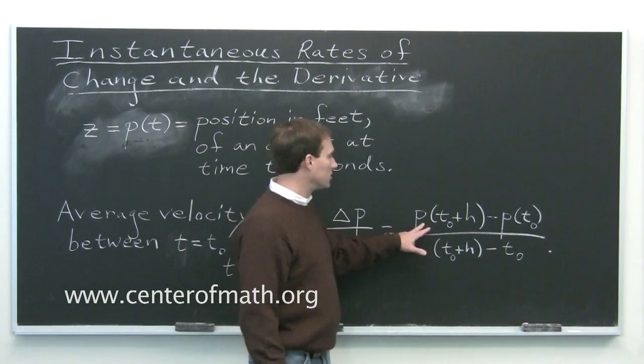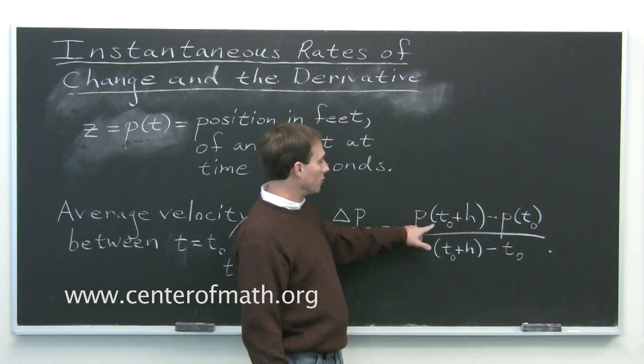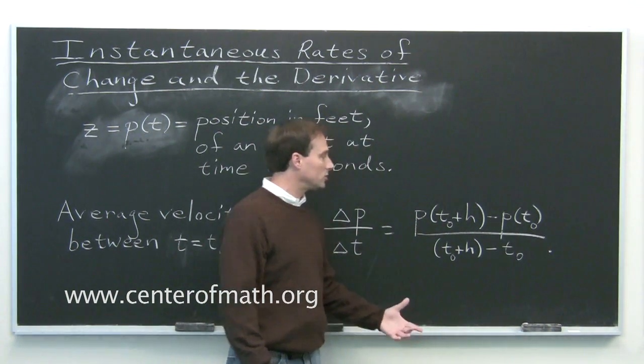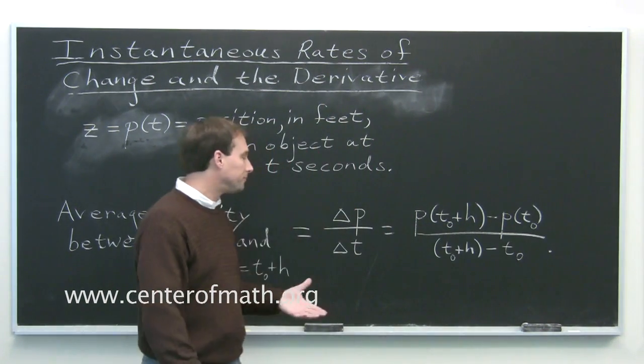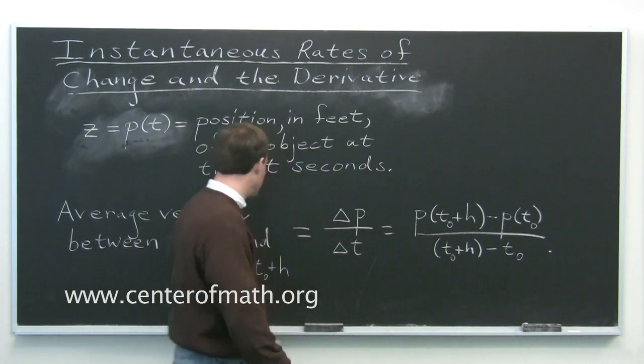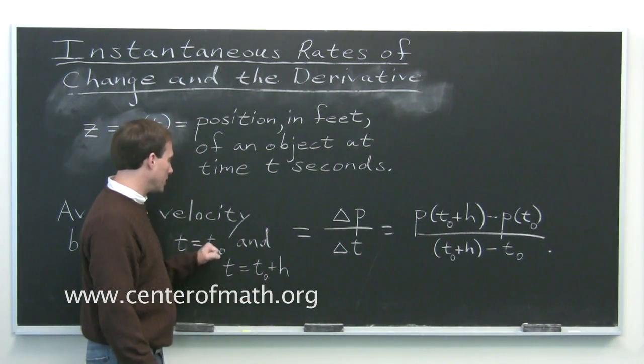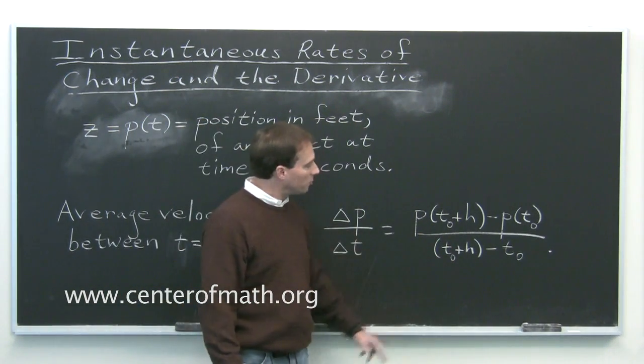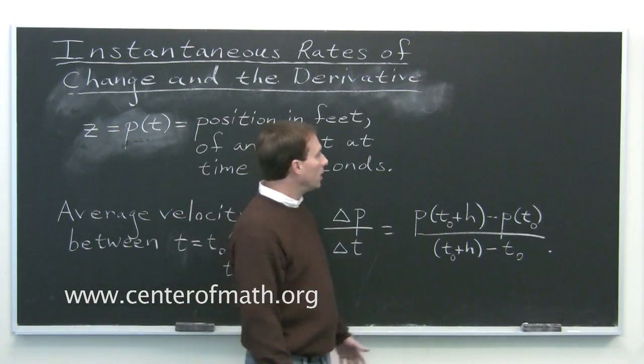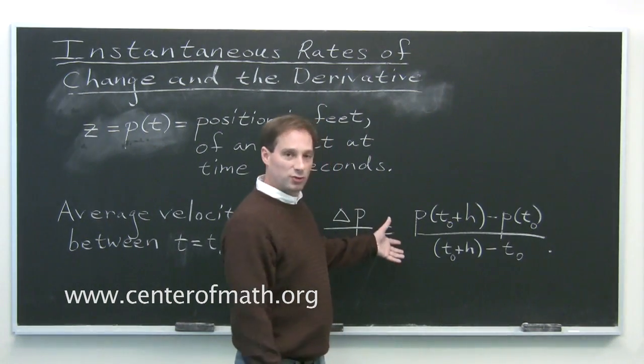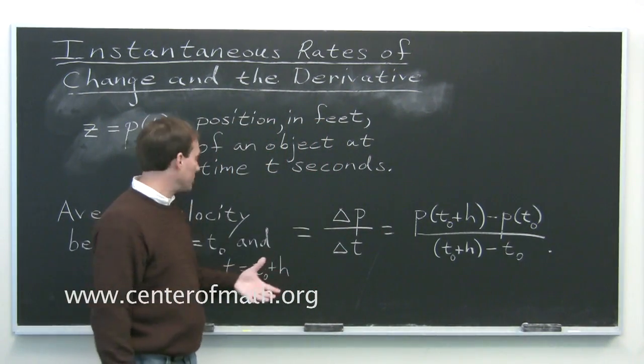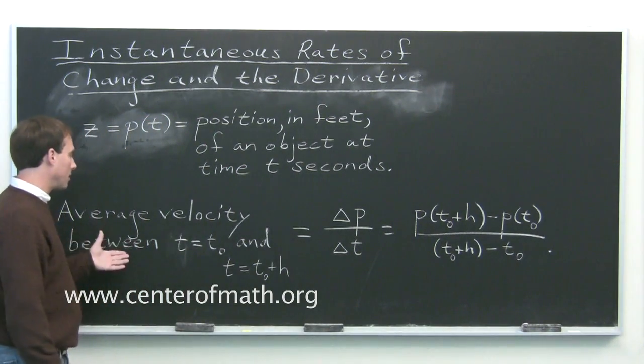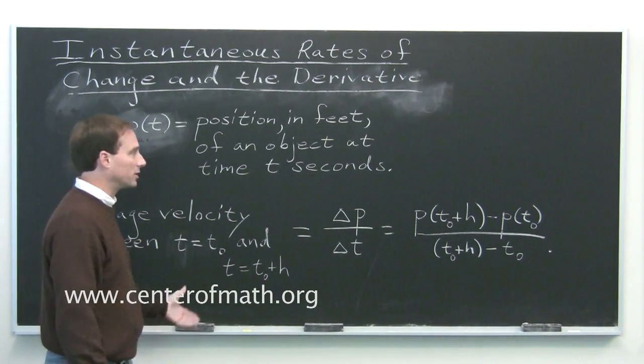It's the change in position over the change in time. Since p is our position function, it's your final position, the position at time t₀ plus h, minus your initial position, so that's the change in your position, and then divided by the change in time, which is t₀ plus h minus t₀. This is the average rate of change of the position with respect to time. It's your average velocity, the average velocity of the object between times t₀ and t₀ plus h.